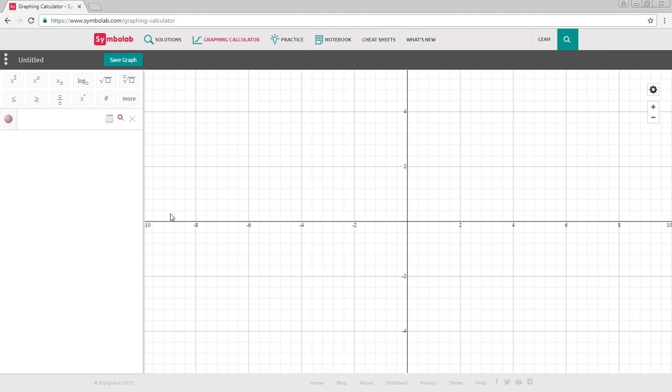To see how Symbolab's graphing calculator works, type in any function you'd like to graph using the scientific pad if needed.